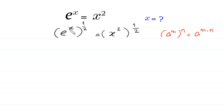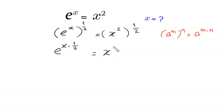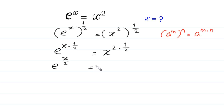This power x will be multiplied by this power 1 over 2, and this power 2 will be multiplied by this power 1 over 2. So e to the power x times 1 over 2, that is x over 2, is equal to x squared times 1 over 2. The 2 cancels, leaving x on the right side.